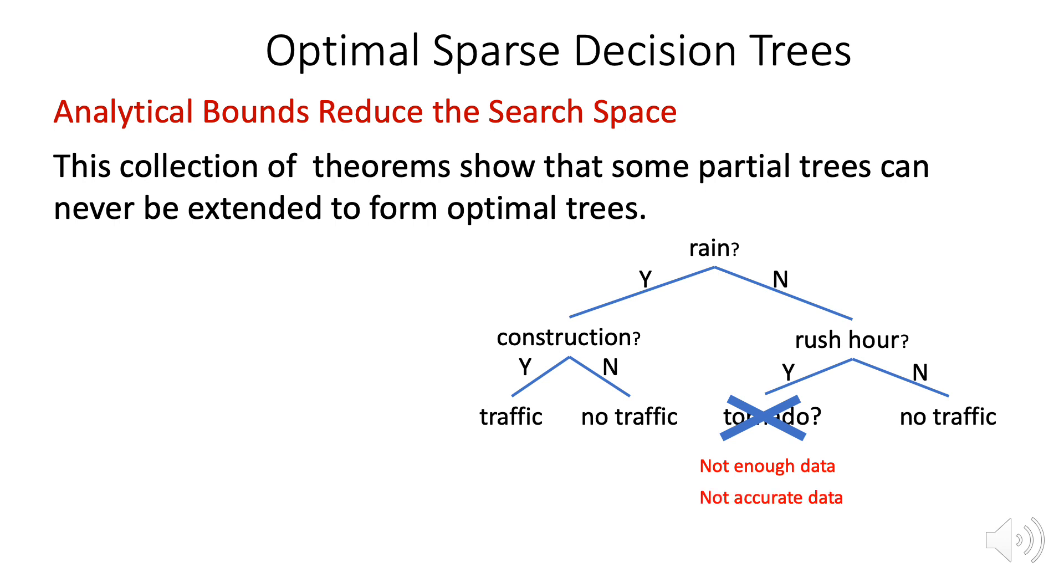And if they're not, we can eliminate that tree and its descendants. And some of the bounds tell us that when the tree has too many leaves to be optimal, then we can eliminate that tree and its descendants. And there are several other bounds, too.